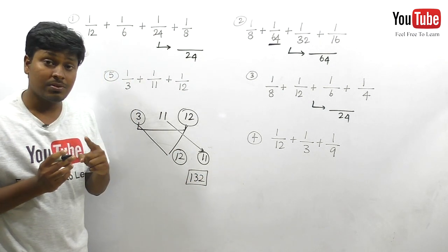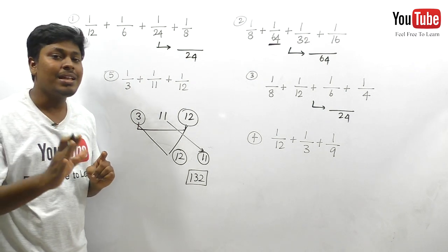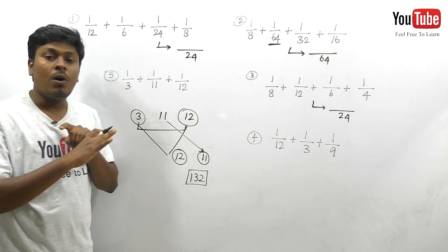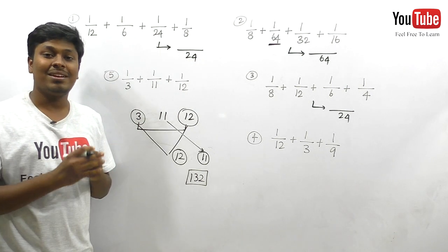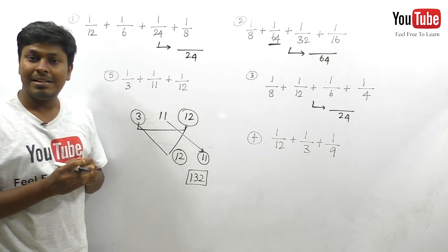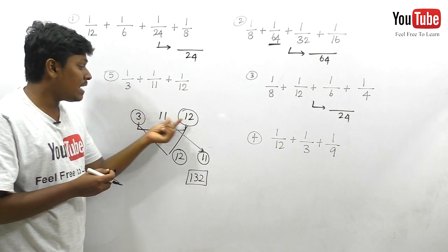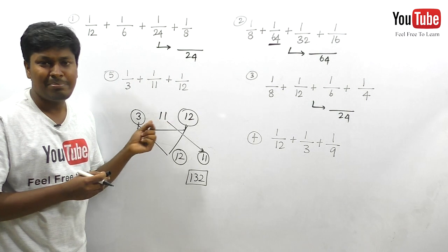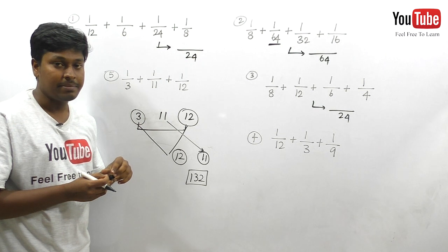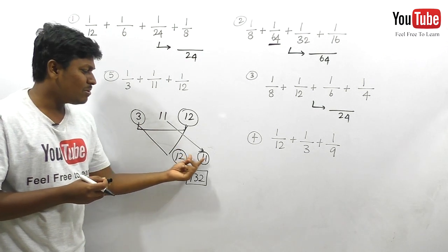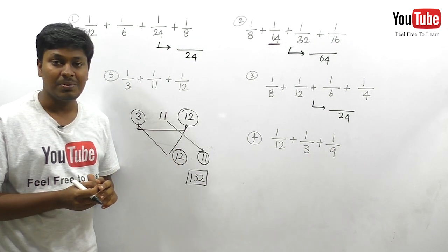This comes only with practice. See the numbers: 3, 11, 12. I took 3 and 12 — not 11, because 11 is a prime number. Taking LCM of 3 and 12 gives 12 as the LCM. The remaining number is 11, and we can't take LCM with it directly, so we multiply: 12 × 11 = 132.